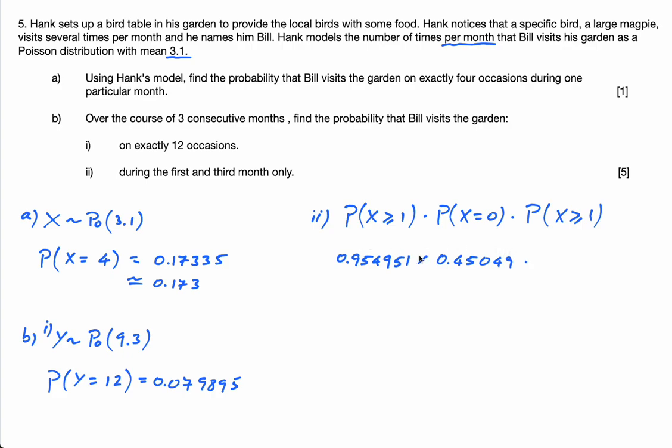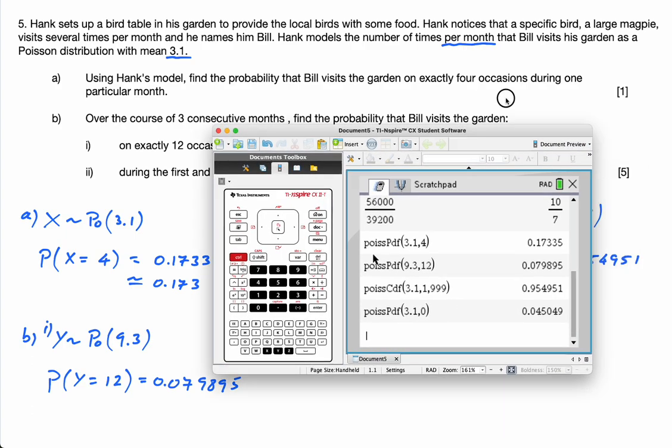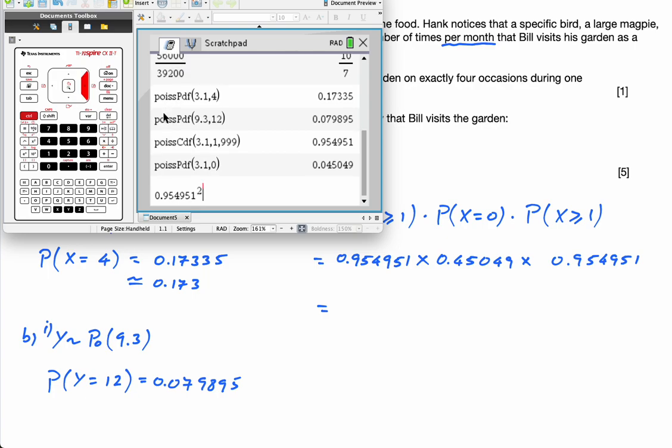0.45049. And then multiply by 0.954951. And this equals, let's just work this out. 0.954951 times, I could just square that because I'm going to multiply by that again. And then times 0.45049. Press Enter.